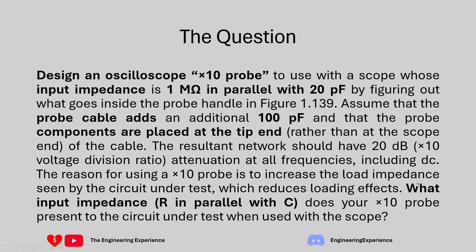The question itself is quite long but the summary is highlighted in bold. We need to design a 10x probe for an oscilloscope that has a 1 megaohm input impedance and a parallel 20 picofarad capacitor. We need to put some components onto the probe itself to compensate for these. From figure 1.139 in the book, we also have a value of 100 picofarads representing the scope leads, and the compensation components need to be placed at the tip end.